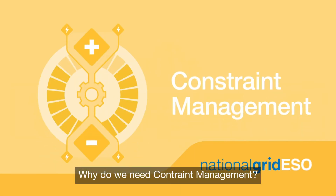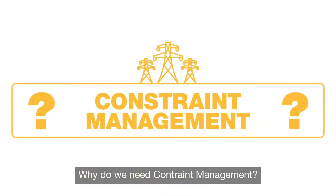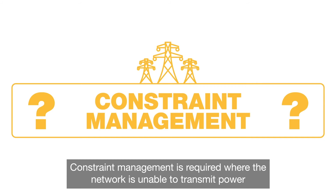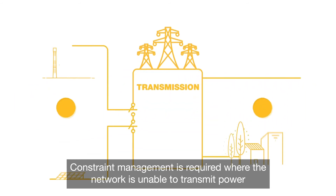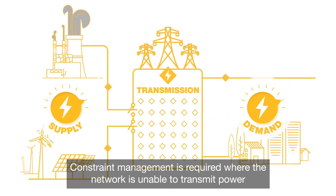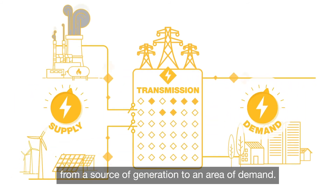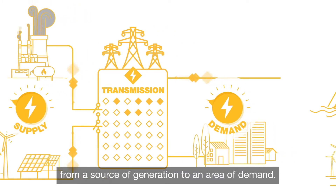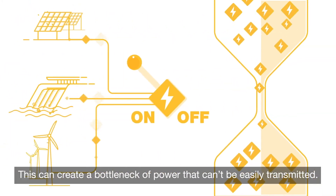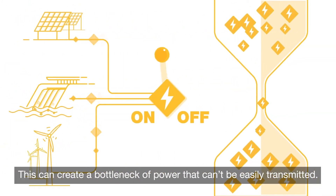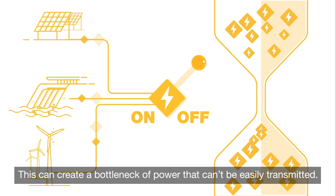Why do we need constraint management? Constraint management is required where the network is unable to transmit power from a source of generation to an area of demand. This can create a bottleneck of power that can't be easily transmitted.